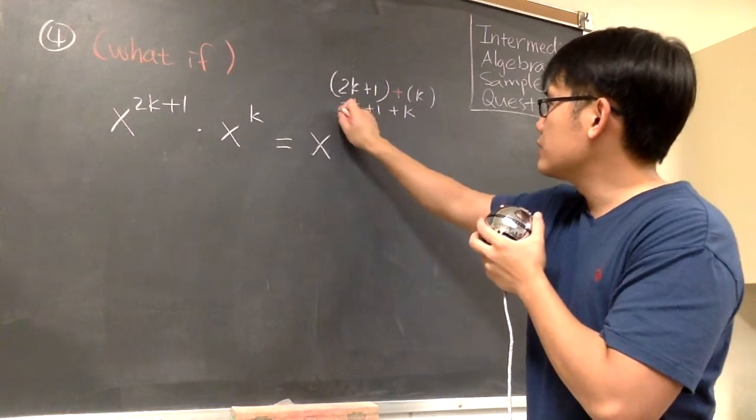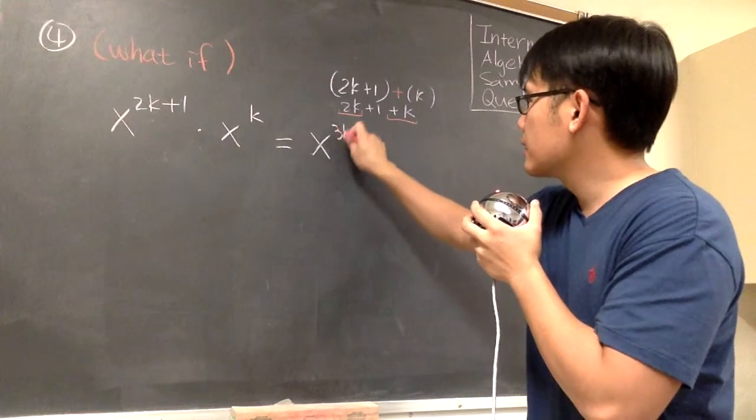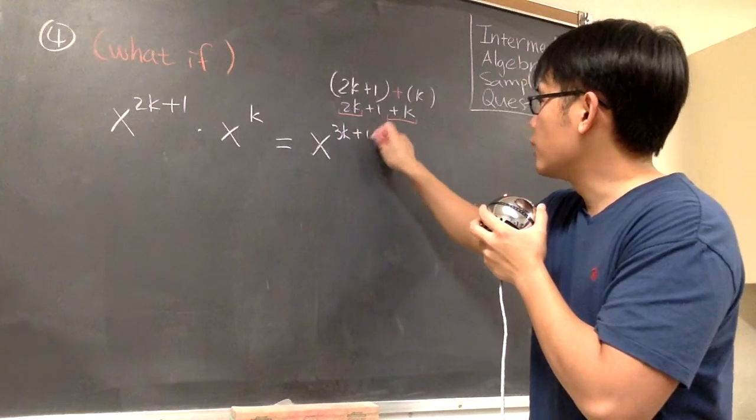The only thing that we have to work out is the 2k plus k. And that will give us 3k. And we also have the plus 1 right here.